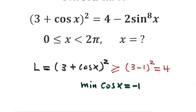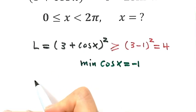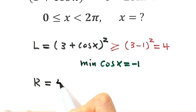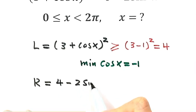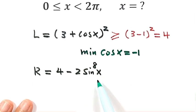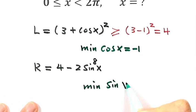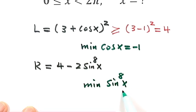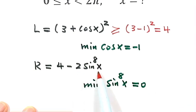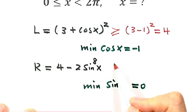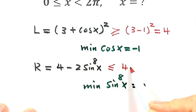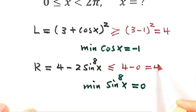Now let's look at the right hand side: 4 minus 2sin⁸x. What is the minimum value of sin⁸x? Because this term is non-negative, its minimum value is 0. If we substitute 0 for sin⁸x, the expression is less than or equal to 4 minus 0, which is just 4. So the right hand side is less than or equal to 4.